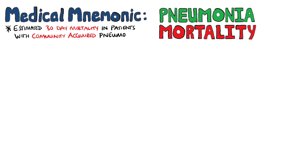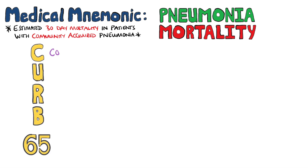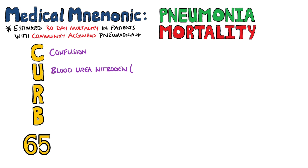The C stands for confusion. U is then to remind you of BUN, which is the blood urea nitrogen, with values greater than 7 mmol per litre, or 19 mg per deciliter, being significant.